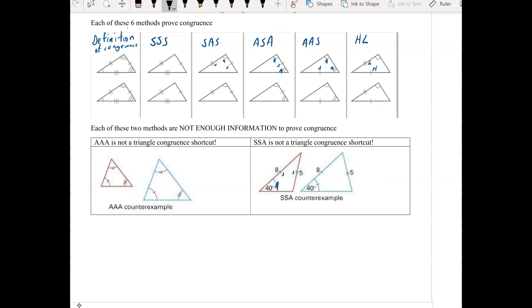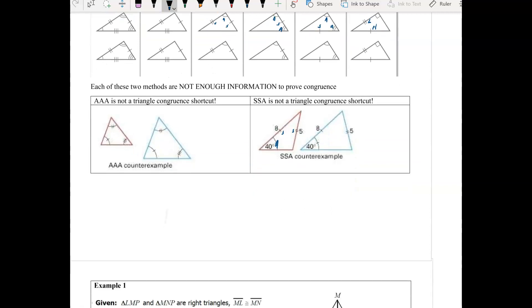Unless, unless that angle happens to be a right angle, then the side across from it is no longer called the side, it's called a hypotenuse, the side next to it is no longer just called the side, it's called the leg, and that's the special case of SSA, which we call HL.